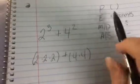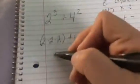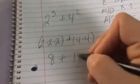So now I'm going back through PEMDOS, and I have parentheses, 2 times 2 is 4, 4 times 2 is 8, plus 4 times 4 is 16.